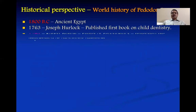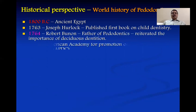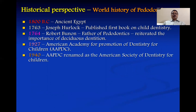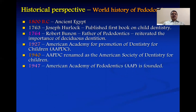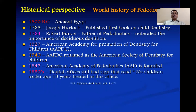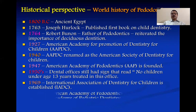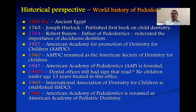Regarding the historical perspective of pedodontics: there is mention of children's dentistry in 1800 BC in ancient Egypt. In 1763, Joseph Herlock published the first book on child dentistry. In 1764, Robert Burnon, known as the father of pedodontics, reiterated the importance of deciduous dentition. In 1927, the American Academy of Promotion of Dentistry for Children was formed. In 1940 it was renamed, and in 1947 the American Academy of Pediatric Dentistry for Children was founded.